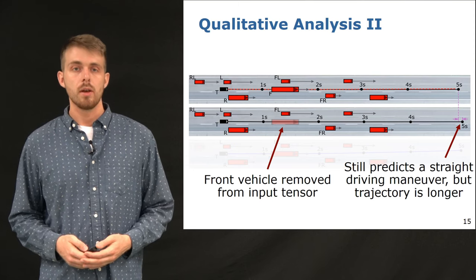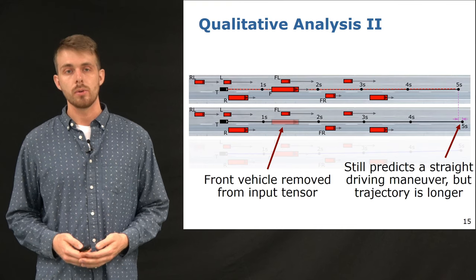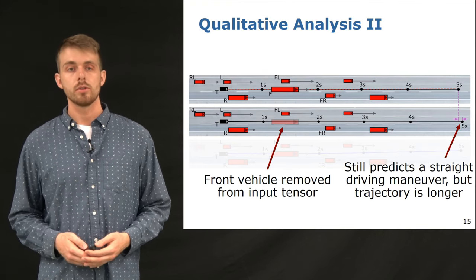By removing the slower car in front, a lane change is still not favored, but the target car is no longer required to slow down. This can be seen by the longer predicted trajectory.